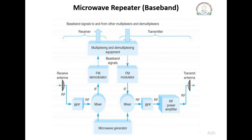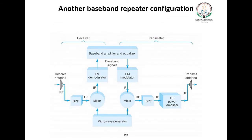In the block diagram, the RF signal is downconverted to IF, then further downconverted to baseband, and then upconverted from IF to RF before being fed to the transmit antenna. A second baseband repeater configuration demodulates the RF to baseband, then amplifies, reshapes, and modulates the FM carrier. With this technique, the baseband is not reconfigured.